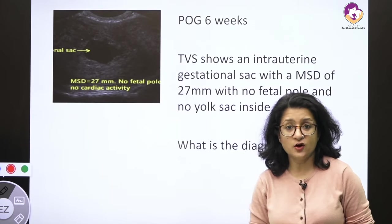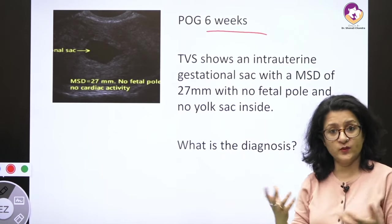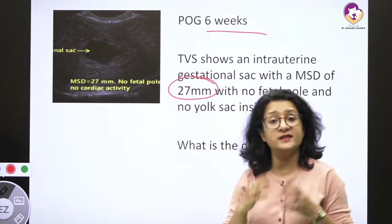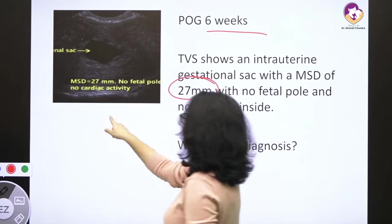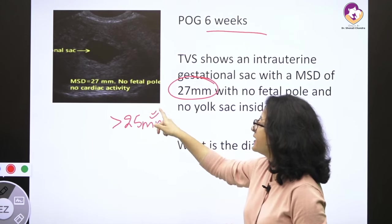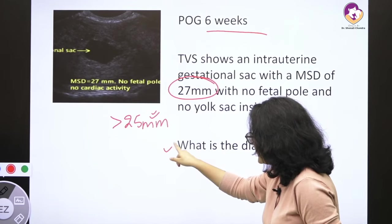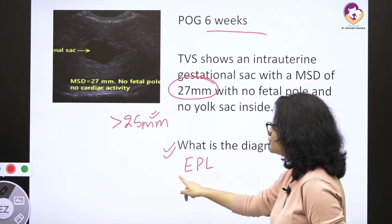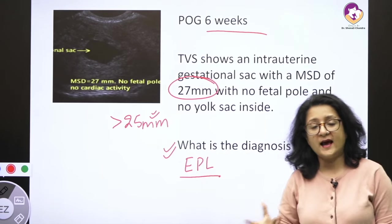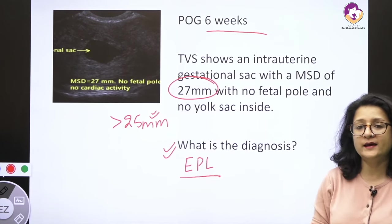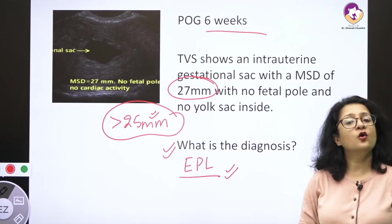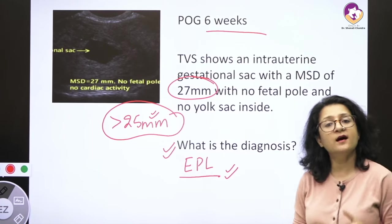Now, if the period of gestation was 6 weeks and transvaginal sonography showed an intrauterine gestational sac with a mean sac diameter of 27 mm — which is more than 25 mm — and yet there is no fetal pole or yolk sac inside, that is when we make the diagnosis of missed abortion or early pregnancy loss. When the gestational sac is more than 25 mm in diameter with nothing inside, the diagnosis of early pregnancy loss is confirmed.